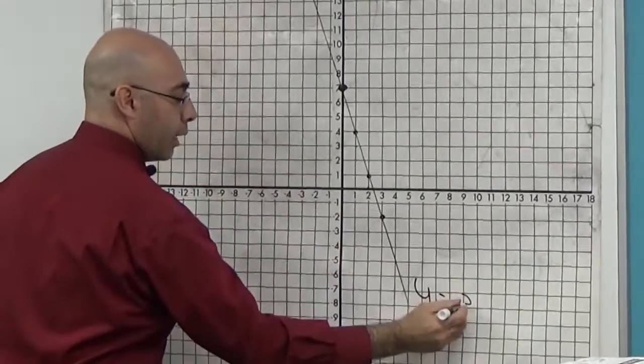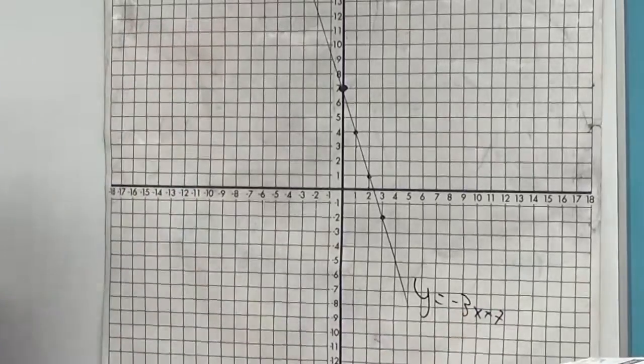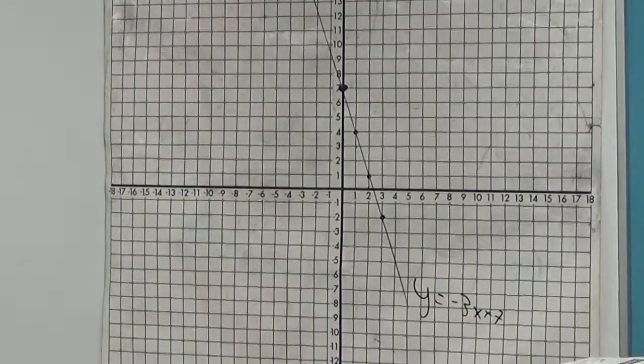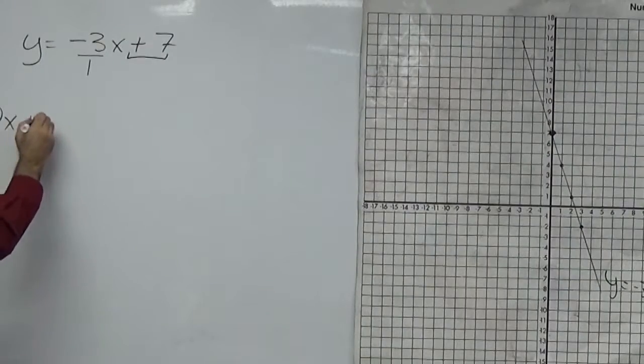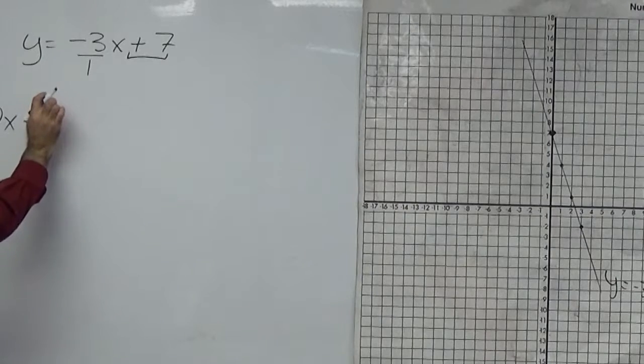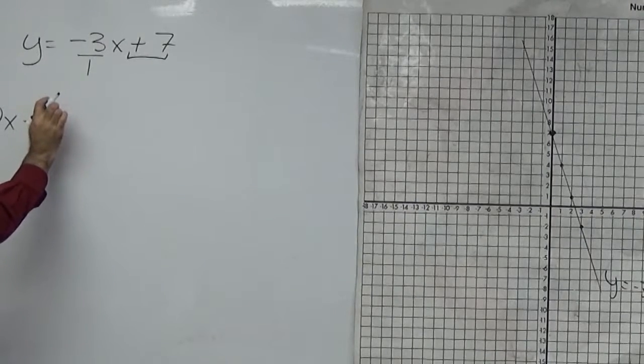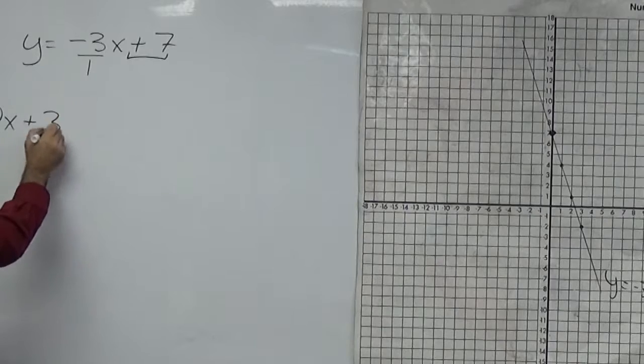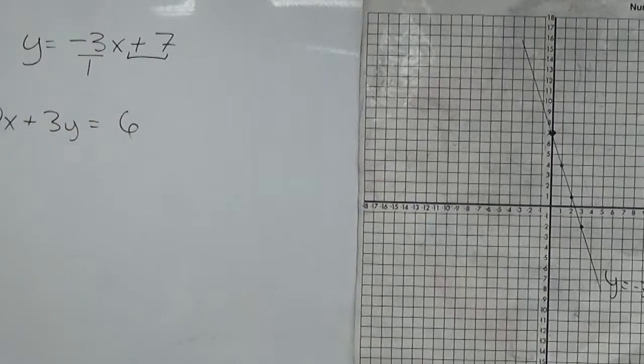y equals negative 3x plus 7. Now if I had another graph like this, say 2x plus 3y equals 6. Now you can rearrange this thing to make it look like y equals, but here's another way to graph this line. Now I'm going to do this in blue.